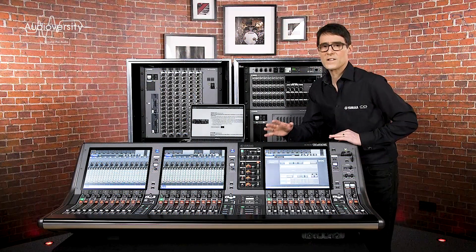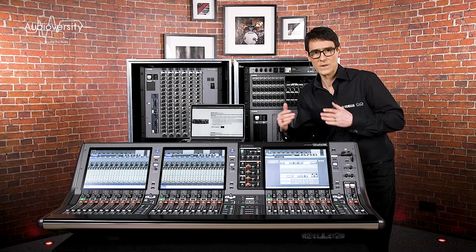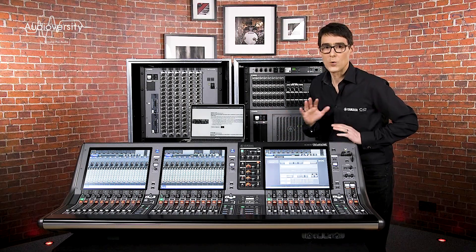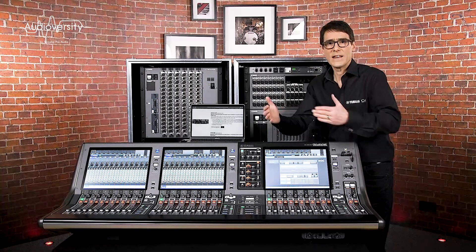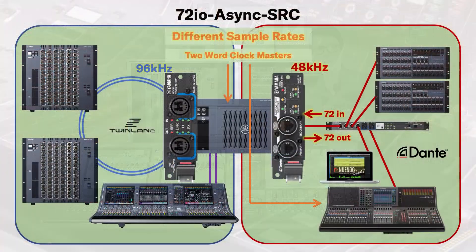All the other modes are asynchronous, so they are more flexible with the clocking, but as a result some audio channels are sacrificed. If you need inputs and outputs, use the 72IO async SRC mode. It provides 72 inputs and outputs and allows the Dante clock and sample rate to be quite separate from the RIVAGE system. So Dante can have a different master device running at 48 kHz or another sample rate while RIVAGE runs at 96 kHz with its own internal clock. It's the most flexible solution.